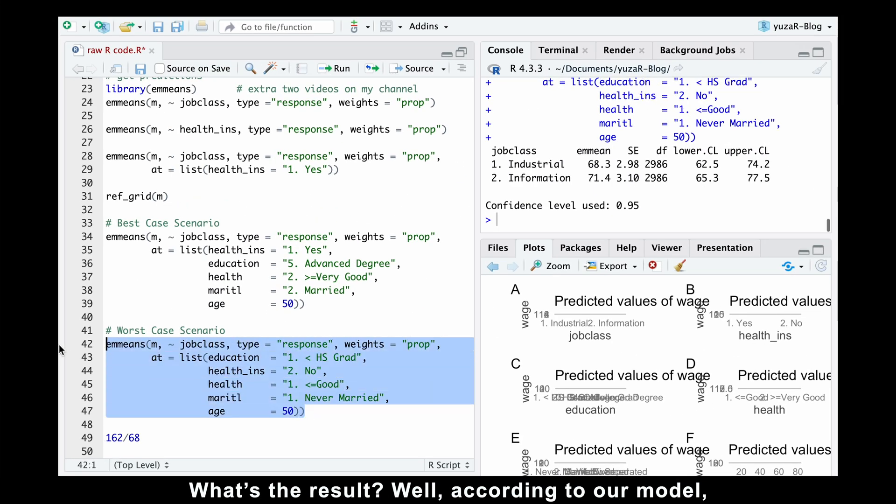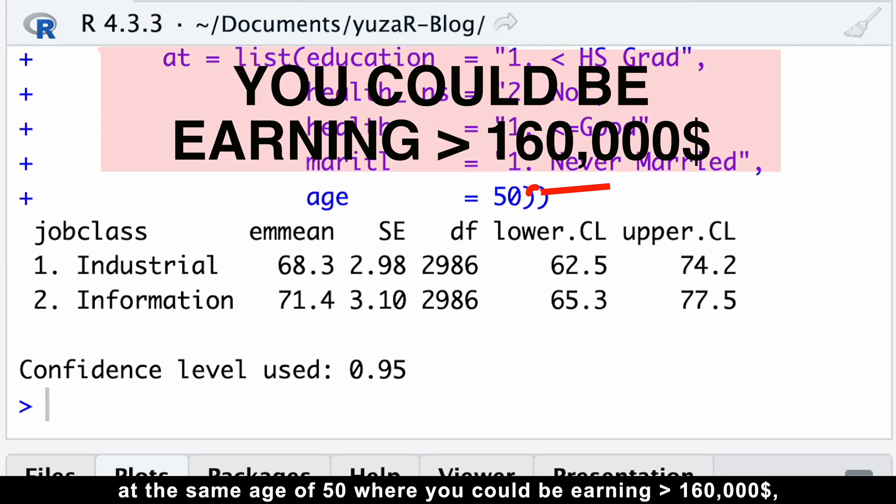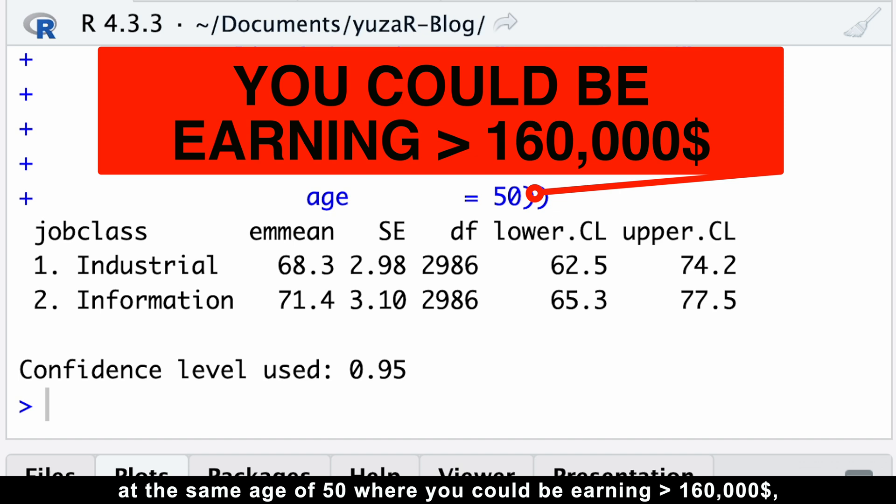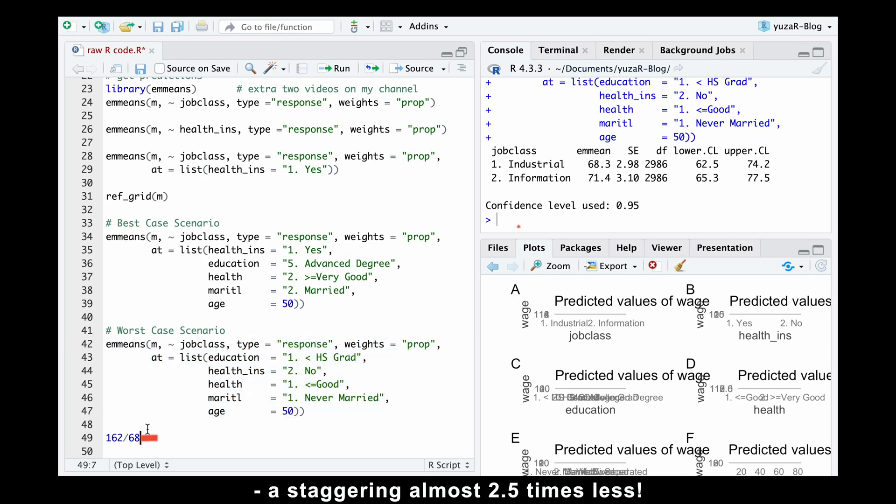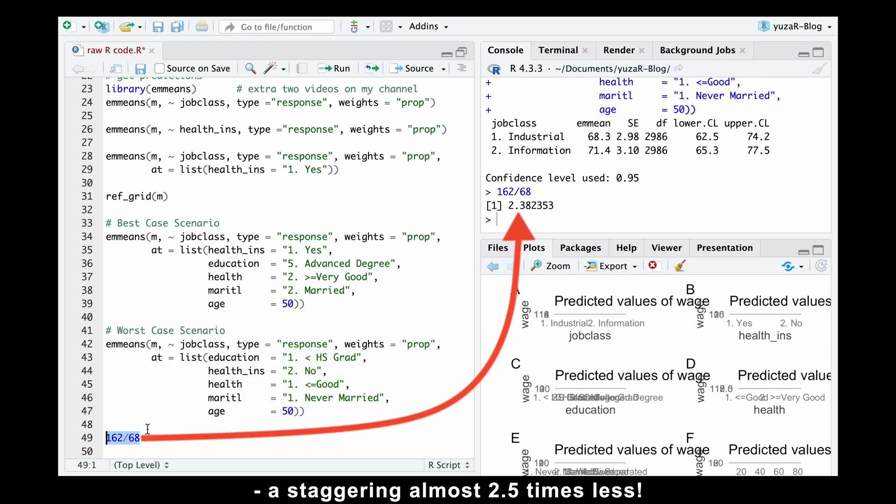Well, according to our model, at the same age of 50, where you could be earning over $160,000, you might instead be earning only $68,000, a staggering almost two and a half times less.